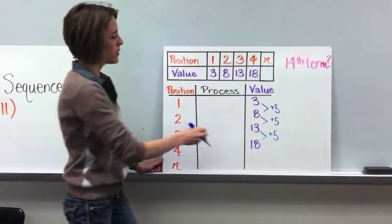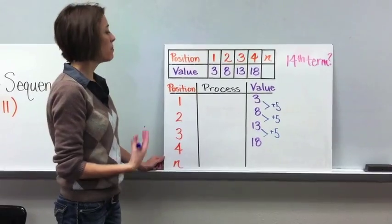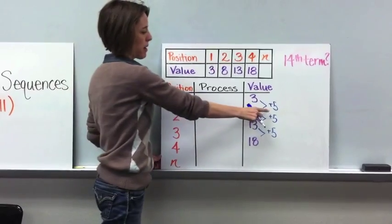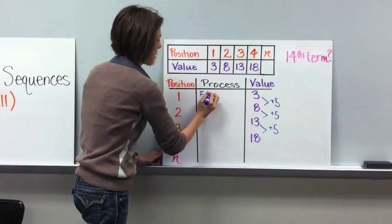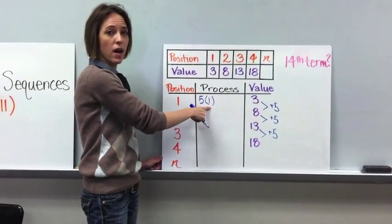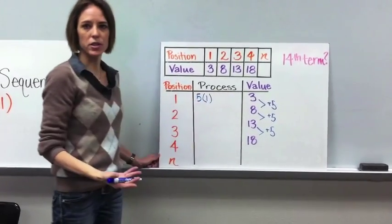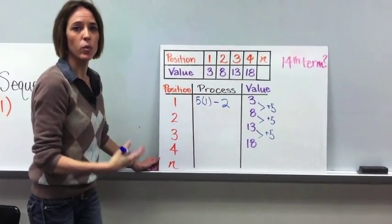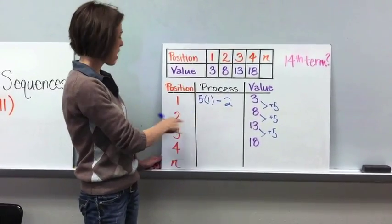Remember from the last video that whatever you're repeatedly adding — in this case it's 5 — if you repeatedly add something, that means you're going to be multiplying it. So you take your position number and multiply it by the common difference. So we have 5 times 1, which equals 5. But remember, we need to get to the value of 3. If we're at 5 and we need to get to 3, we need to subtract 2. So 5 times 1 is 5, minus 2 is 3. So that works.